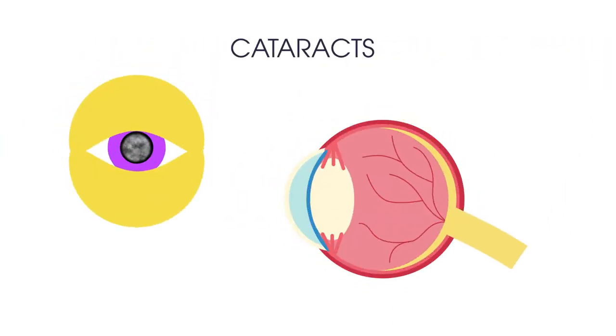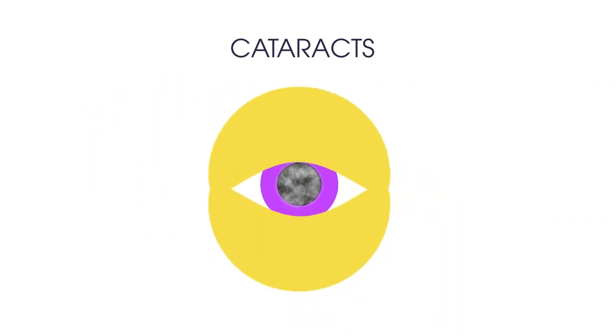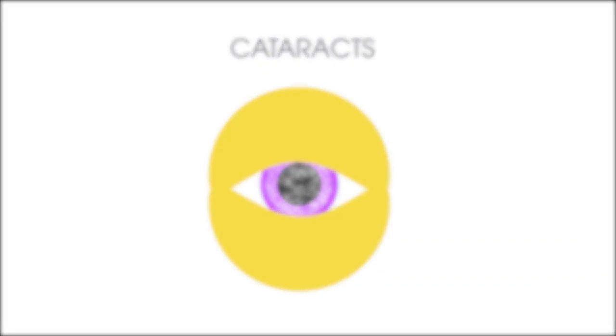The third condition is cataracts. This is when the lens, a small transparent disc inside your eye, develops cloudy patches. Cataracts are more common in older people. Over time, the cloudy patches usually become bigger causing blurry, misty vision and eventually blindness.